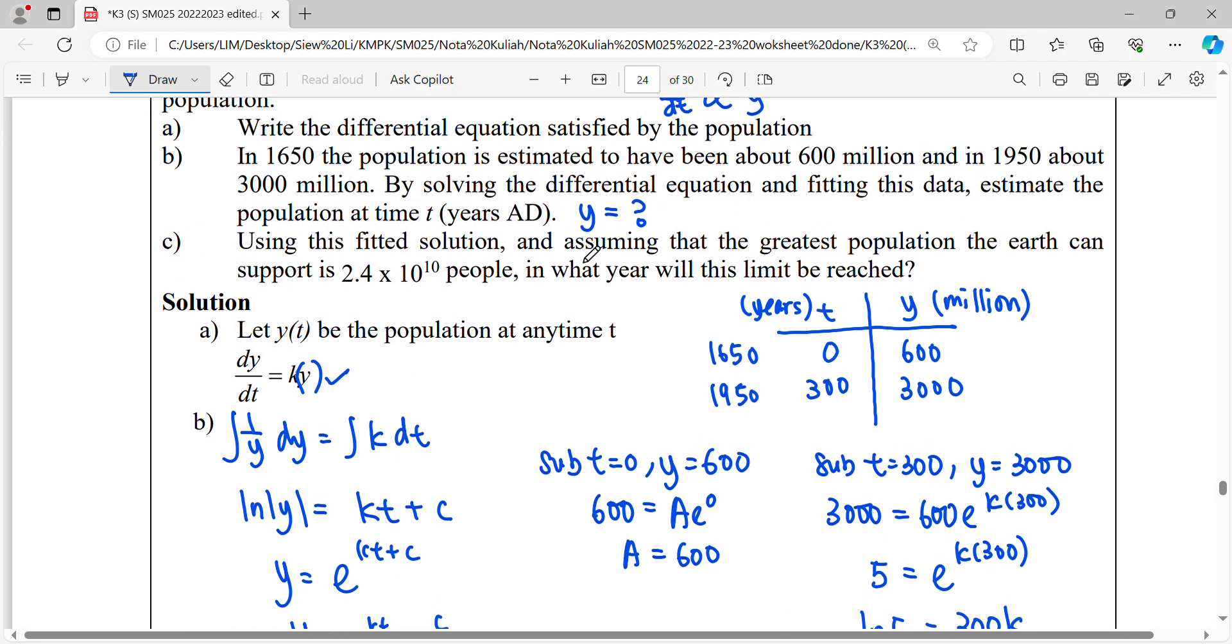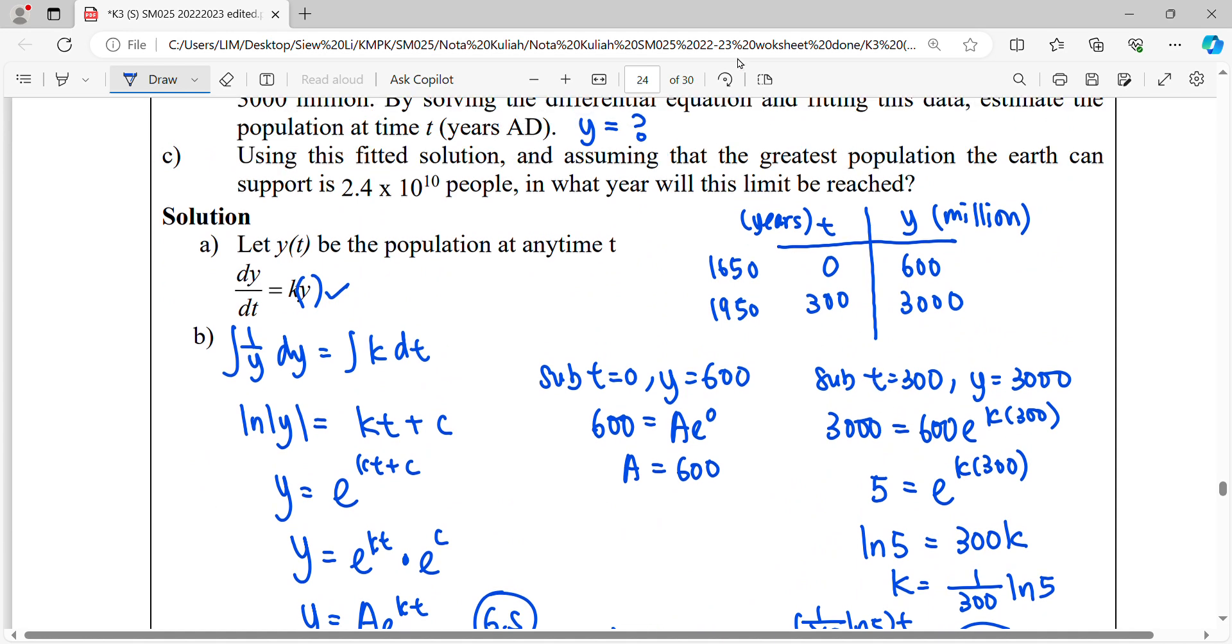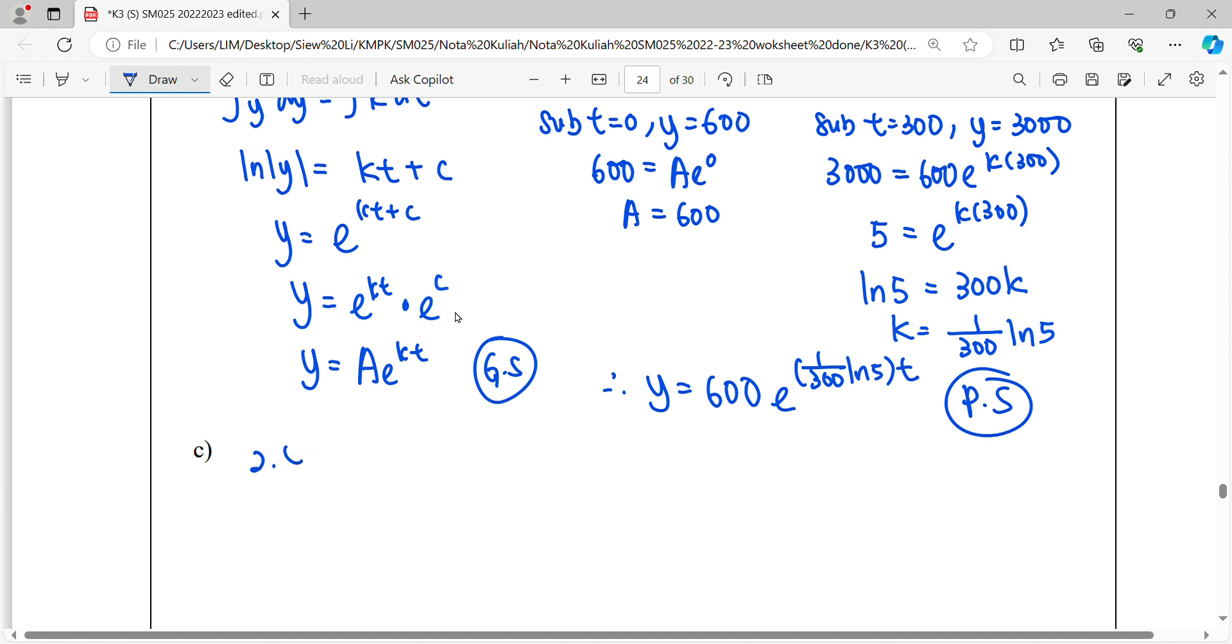For question c, use the particular solution, and assuming that the greatest population the earth can support is 2.4 times 10 to the power of 10 people, what year will this limit be reached? We convert it into million.